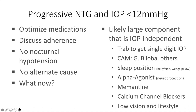Alpha agonists can be used because of hypothetical neuroprotection. Some studies like LoGTS indicated that alpha agonists might be better than beta blockers because of the potential risk for decreased blood flow with beta blockers, and some have advocated that the results indicate alpha agonists are neuroprotective, although that's a leap beyond what the data actually say. Memantine was studied extensively but failed the primary endpoints for neuroprotection, though some physicians use it off-label. Calcium channel blockers were extensively studied both in the US and Japan and found to have a hint of neuroprotection.